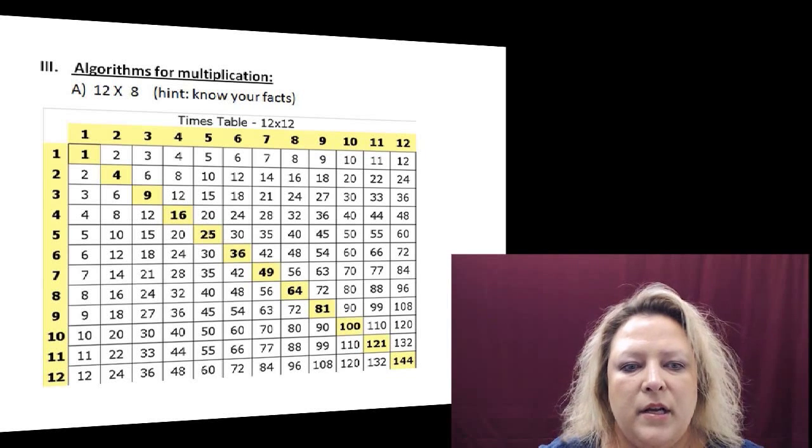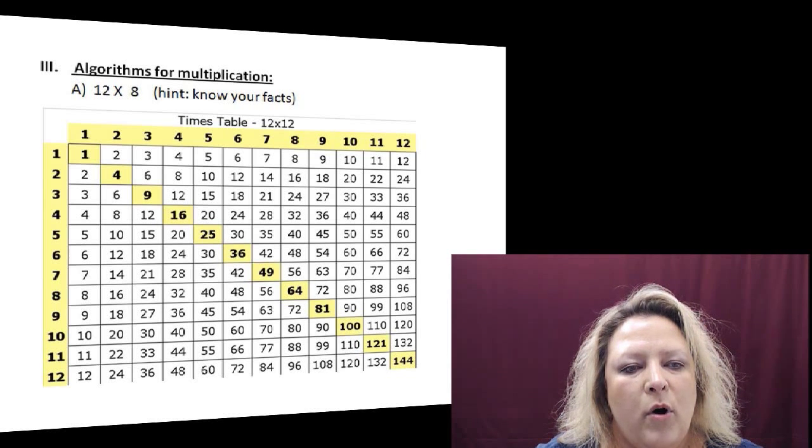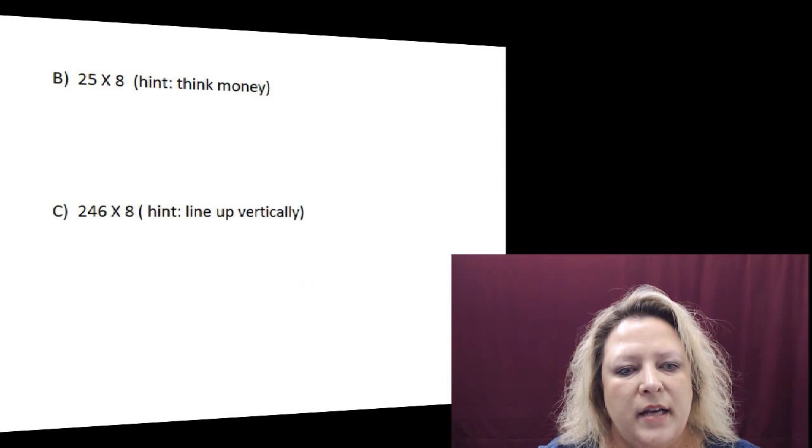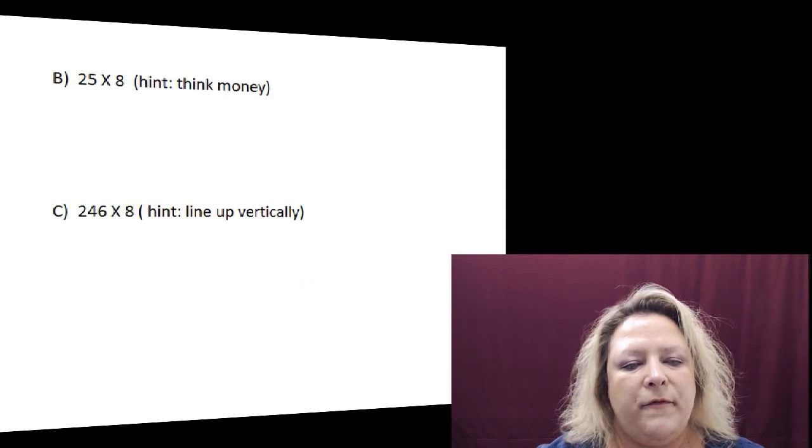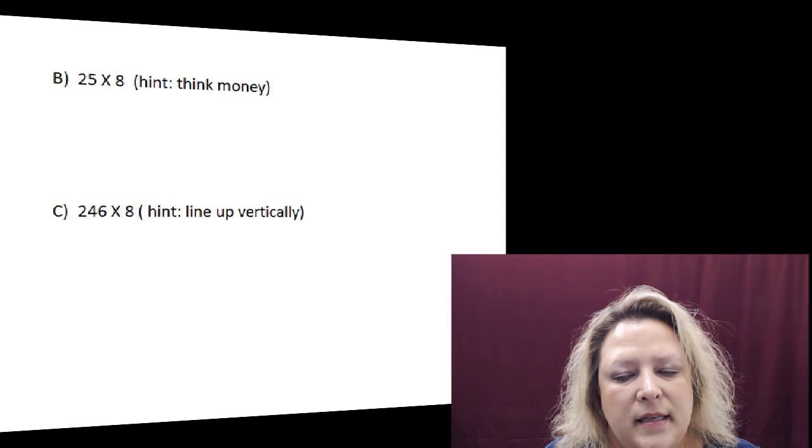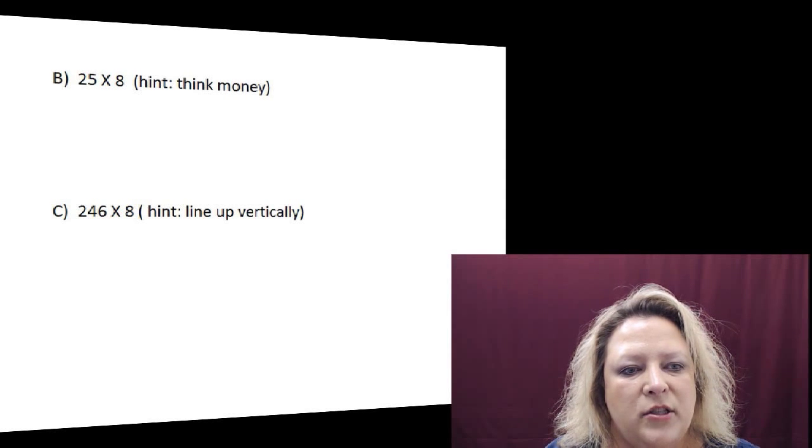What we're going to do is show you how to do multiplication. The first example is 25 times 8. It says to give you a hint thinking of money. Remember that 25 is how much a quarter is worth.